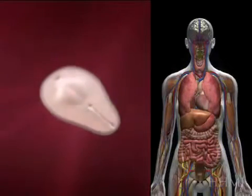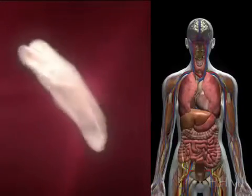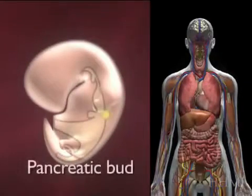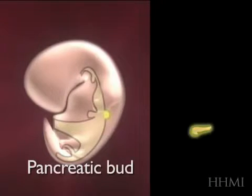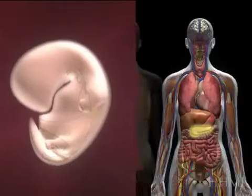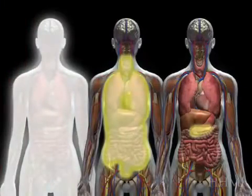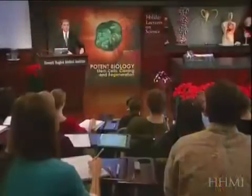To give one more detailed example, let's think about the development of the endoderm, and in this case the formation of the pancreas. There's the pancreatic bud, which comes out of the endodermal derivative. Today I'm going to talk about the pancreas as one example of how an organ, and then the cell types within that organ, get made.